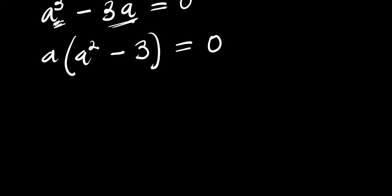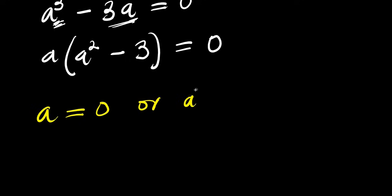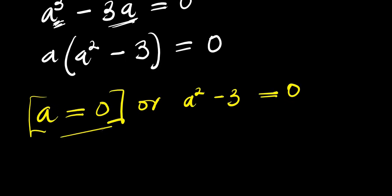The next thing we do is equate each factor to zero. The first gives us a equals 0, or a squared minus 3 equals 0. The a equals 0 case is already solved, so a₁ equals 0 is one of our solutions.